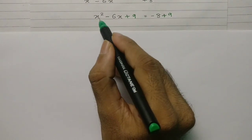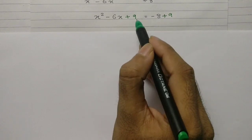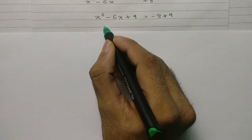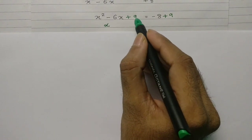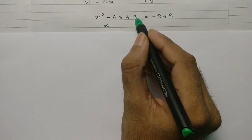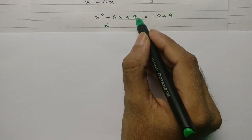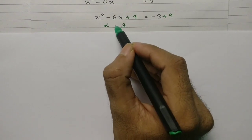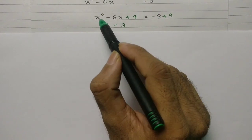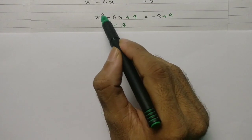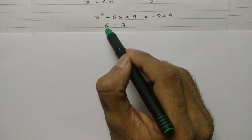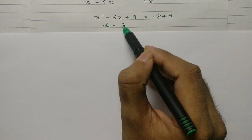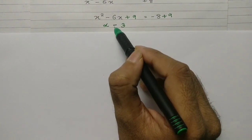From here, I have three terms on the left. From the first term, since it is x squared, I take x. From the third term, 9 equals 3 squared, so I write 3. The sign is taken from the middle term, which is minus. So I get x minus 3, and this will be written as a bracket with a square.